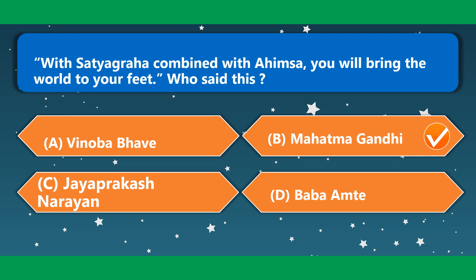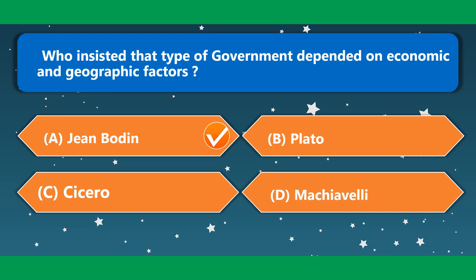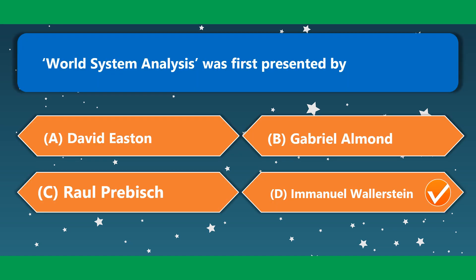'With Satyagraha combined with Ahimsa, you will bring the world to your pitch.' Who said this? Mahatma Gandhi. Who condemned natural rights as an invention of fantasy? Bentham. Who insisted that the type of government depended on economic and geographic factors? This is Jean Bodin. World system analysis was first presented by Emanuel Wallerstein.